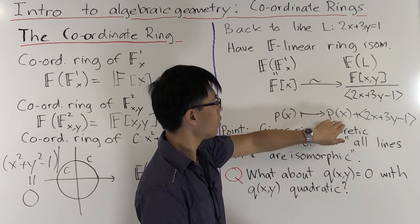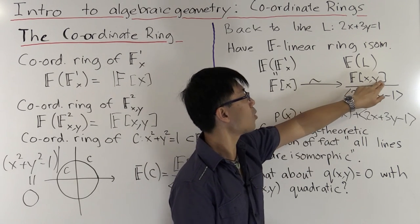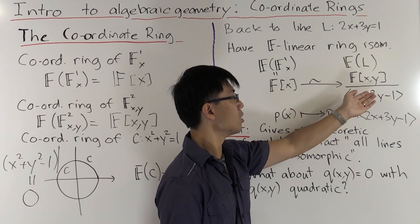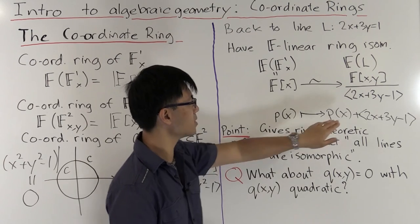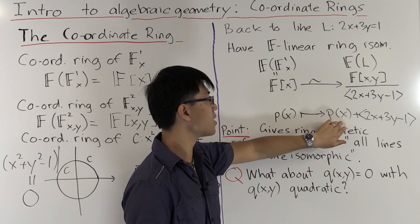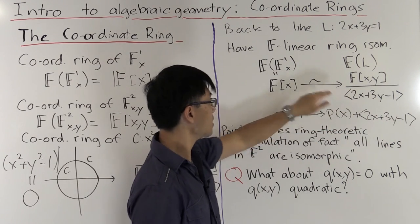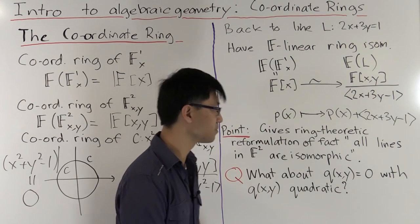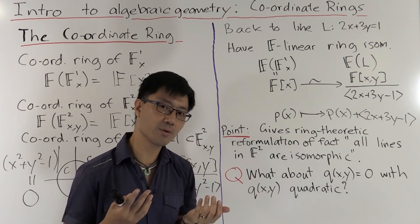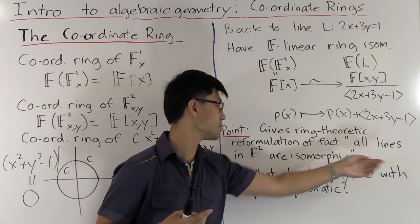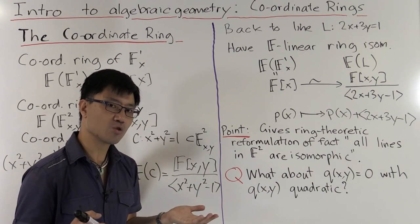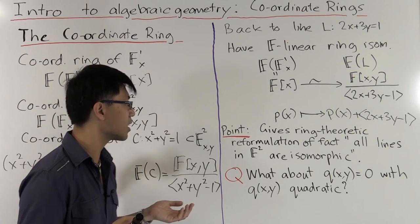The second thing we need to check is whether this map is surjective. So which cosets do you hit? Well, certainly you hit all those cosets of polynomials in x. But can you also get y? Once you have all polynomials x and y, since the image is a subring of this, you'll get the whole of this ring. So how do you get y inside here? Well, the point is that you can rewrite y using this linear equation in terms of a polynomial in x. And that shows you that y, or rather the coset containing y, is in the image of this map. And so this map is also surjective. So what's the point of this isomorphism? Well, the point is that the coordinate ring is a way that allows us to give a ring theoretic reformulation of this simple fact that all lines in F² are isomorphic to each other. And this is one of the many ways that more advanced algebraic ideas such as rings can be used to study algebraic geometry.